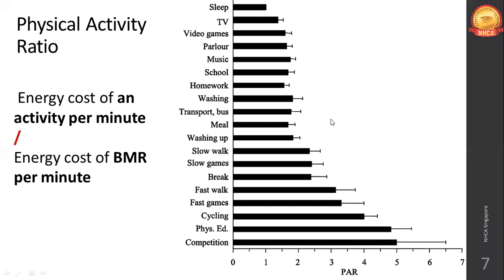Men and women have different basal metabolic rates. Naturally, men have a higher metabolic rate than women. Keeping this in mind, the laboratory formula adds an element for men's BMR and subtracts an element from women's BMR to account for the fact that men naturally have a higher basal metabolic rate.